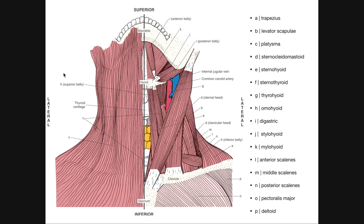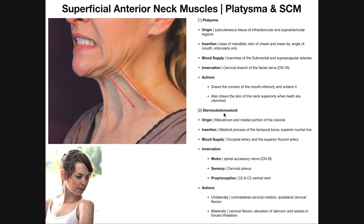Letter D is the sternocleidomastoid, the second muscle of the superficial layer of the anterior neck. It's a two-headed muscle. Notice there's a sternal head and a clavicular head. The origins are the manubrium of the sternum and the medial portion of the clavicle — these two heads are actually considered the origin of the muscle.